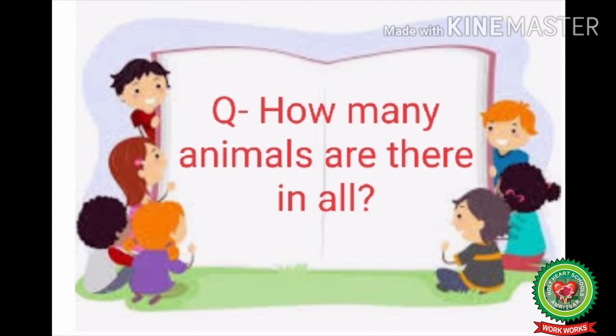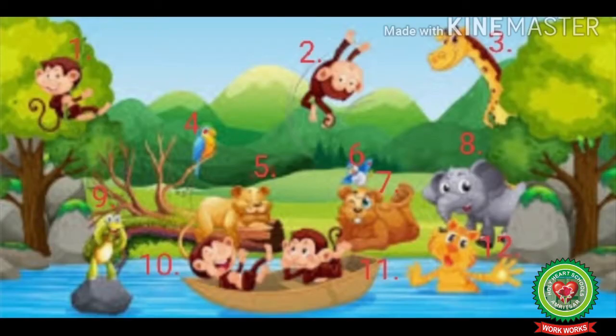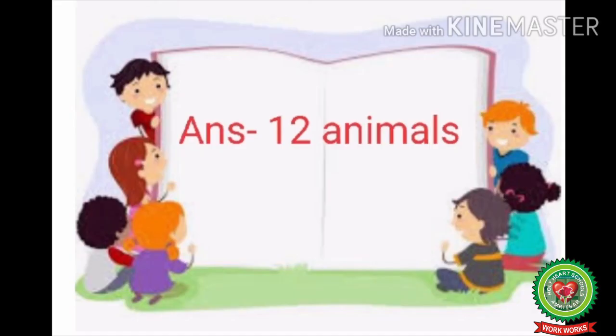The last question is: how many animals are there in all? The phrase 'in all' means we have to find the total number of animals. Looking at the picture, there are 12 animals in all, so the answer is 12 animals.